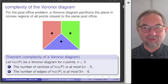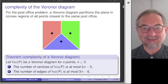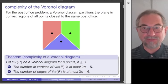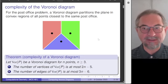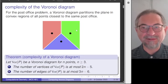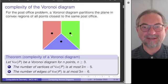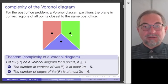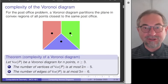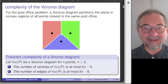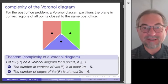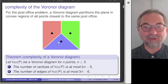Here you see the Voronoi diagram of three sites — the sites are shown in black. Every point in a region with the same color is closest to that black site in that region. So if these three black dots represent post offices, then every person living in that green area goes to the black dot in that green area.